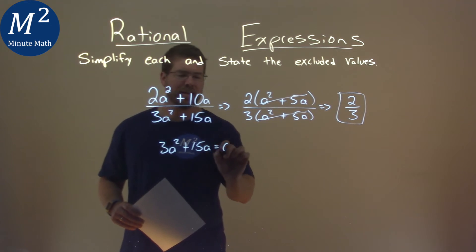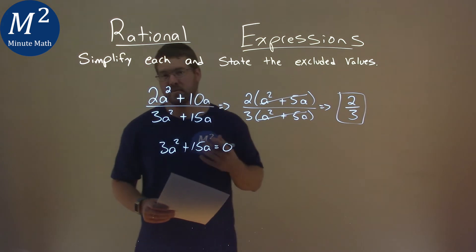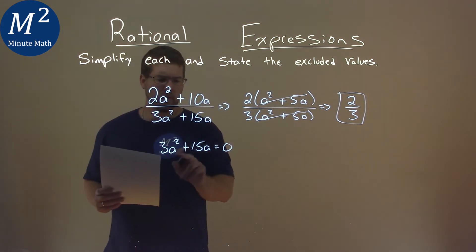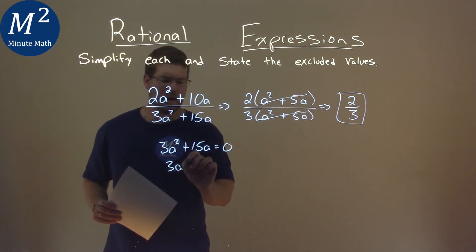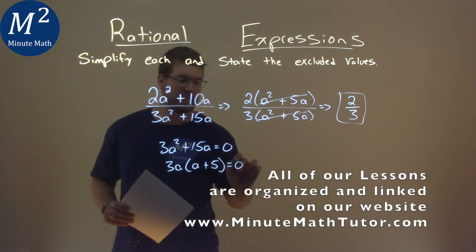We're going to set it equal to 0 and solve for a. What values cause our denominator to equal 0? Well, if I pull out a 3a here, I'm left with 3a times an a plus 5, right? That's equal to 0.